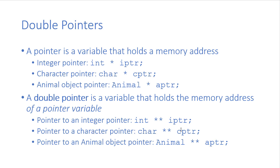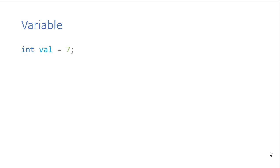We can have a pointer to an integer pointer, a pointer to a character pointer, or a pointer to an animal object — a pointer to any type of pointer. Note that pointers to different types are different types themselves, so our double pointer is a pointer to a specific type of pointer. Let's see some code examples and how they work in memory.